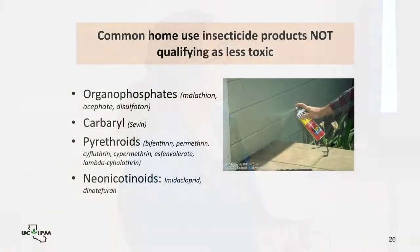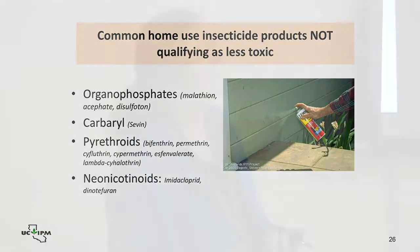Most pyrethroids have names ending in "-rin" — permethrin, cyfluthrin, cypermethrin, esfenvalerate, and others. These are products to mostly try to avoid. Neonicotinoids — including imidacloprid and dinotefuran — are systemic insecticides that are also in the category to avoid.